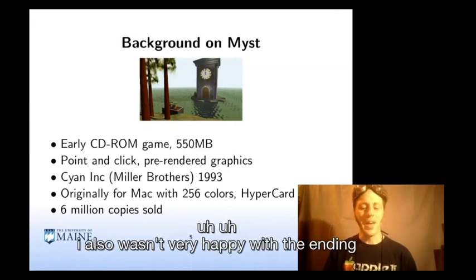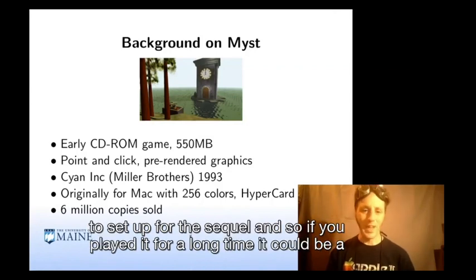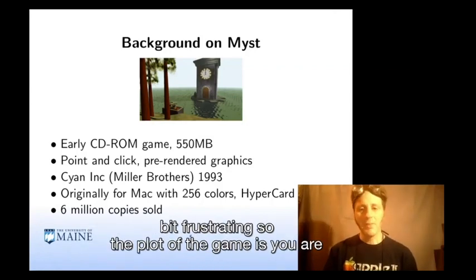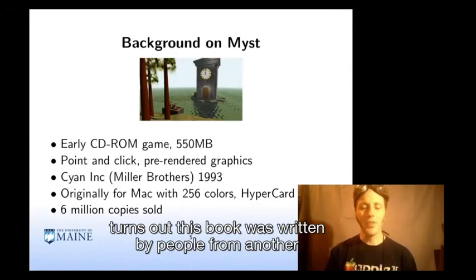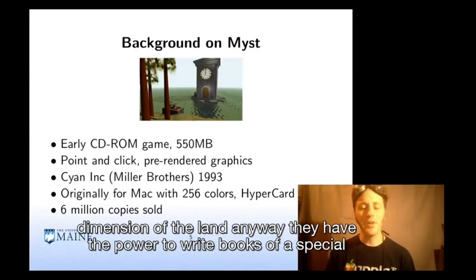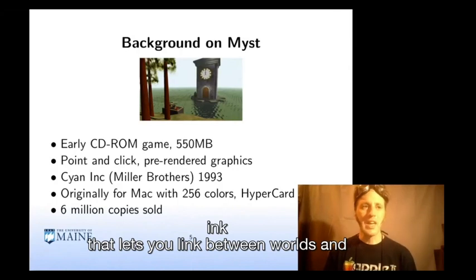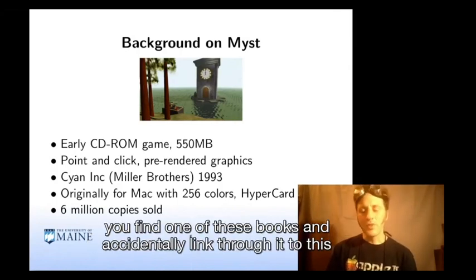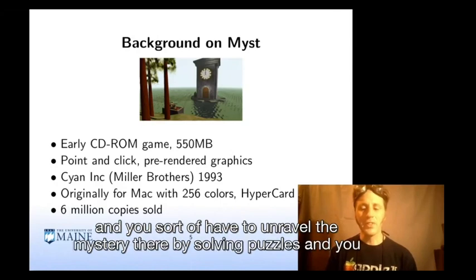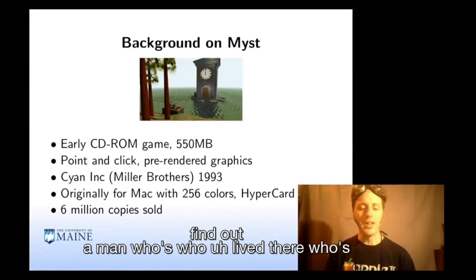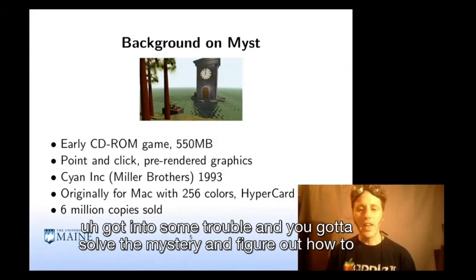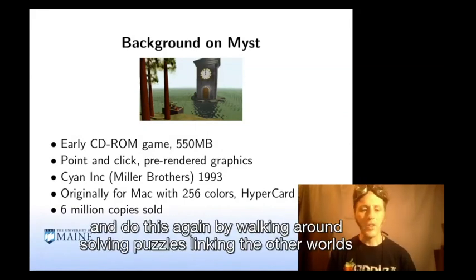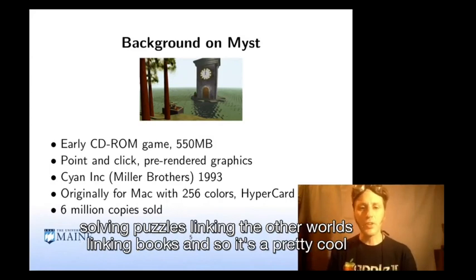I wasn't very happy with the ending at the time — it's mostly there to set up the sequel, so if you've played for a long time it can be a bit frustrating. The plot of the game is: you find a mysterious book written by people from another dimension who have the power to write books in a special ink that let you link between worlds. You find one of these books and accidentally link through it to an island called Myst, where you have to unravel the mystery by solving puzzles, find a man who's trapped with sons who got into trouble, and figure out how to escape by walking around, solving puzzles, and linking to other worlds.